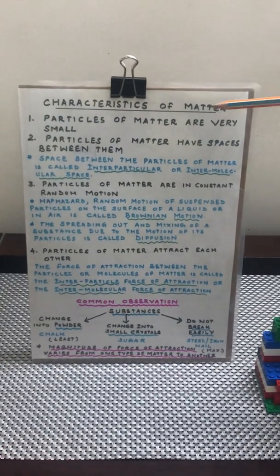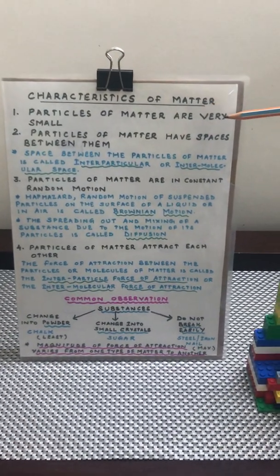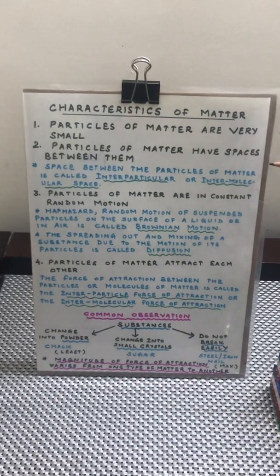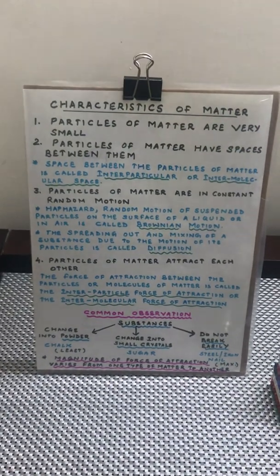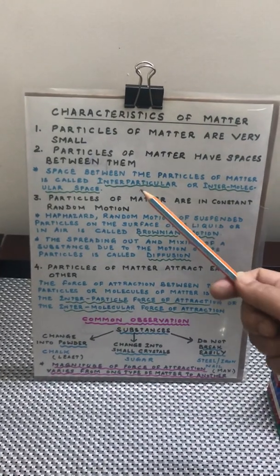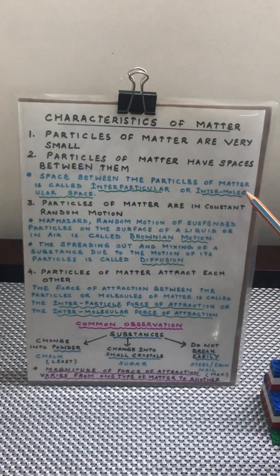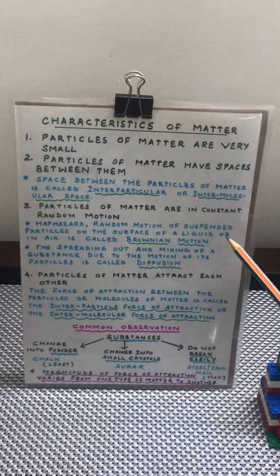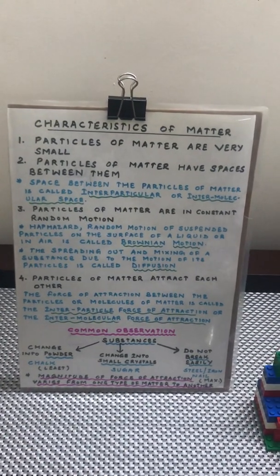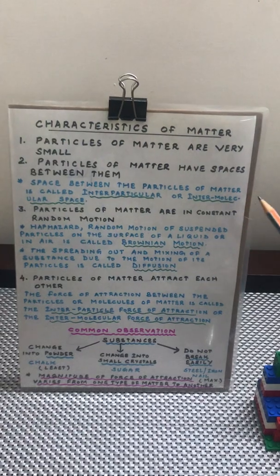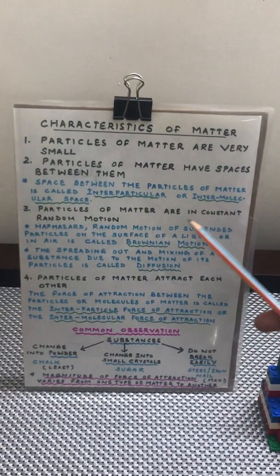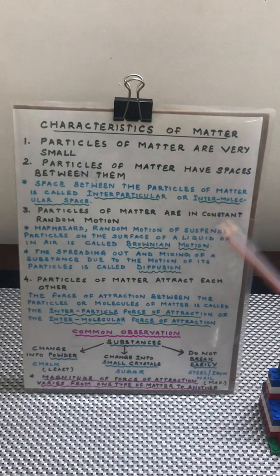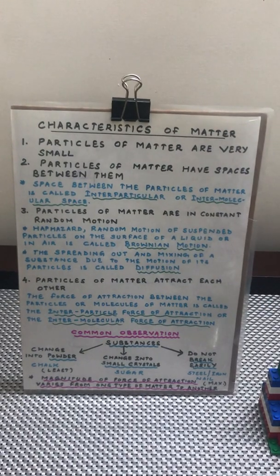Particles of matter are very small. Particles of matter have spaces between them, and these spaces between the particles of matter are known as interparticulate or intermolecular spaces. The particles of matter are in constant random motion, which means they keep on constantly moving.